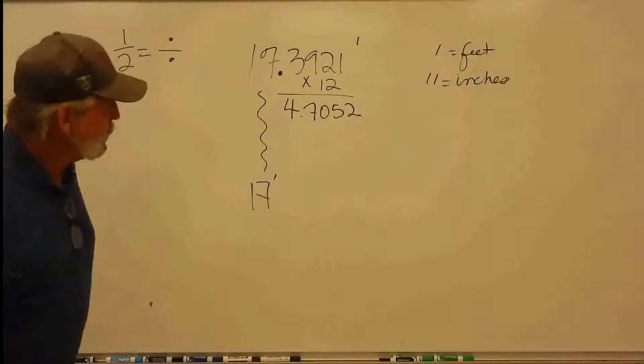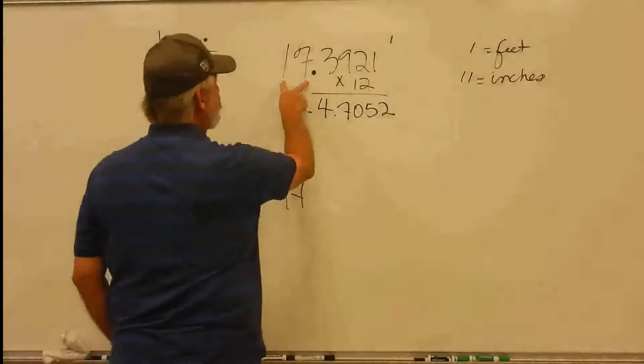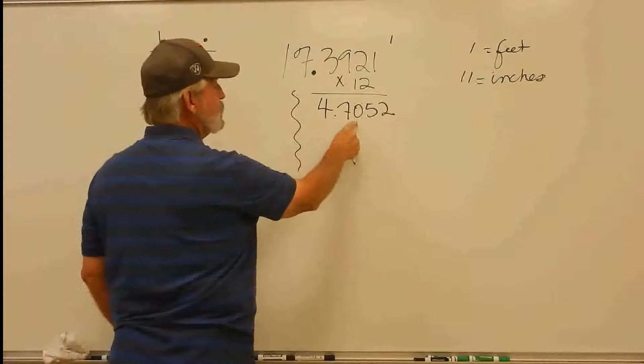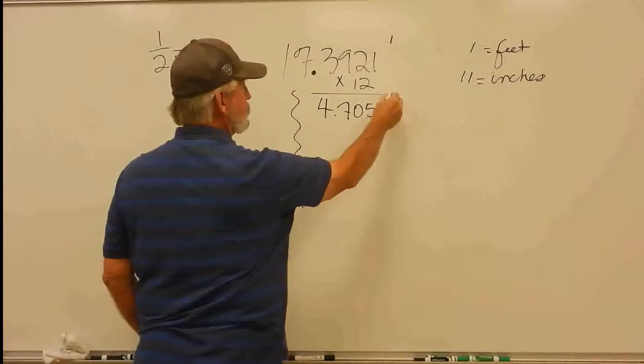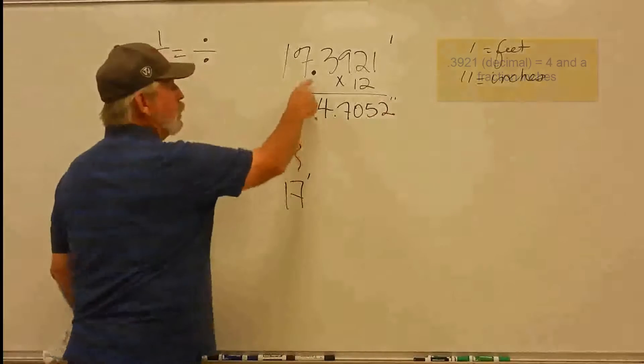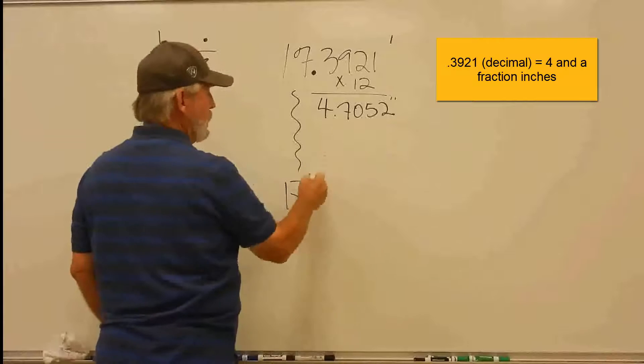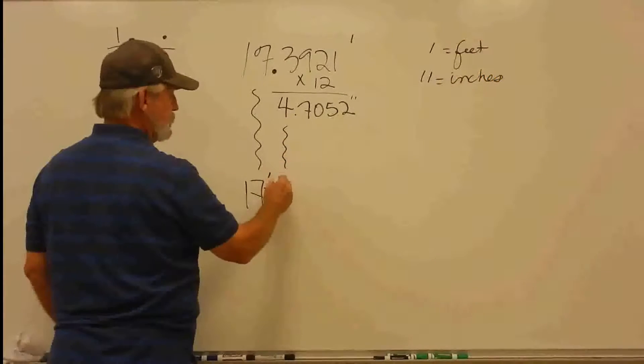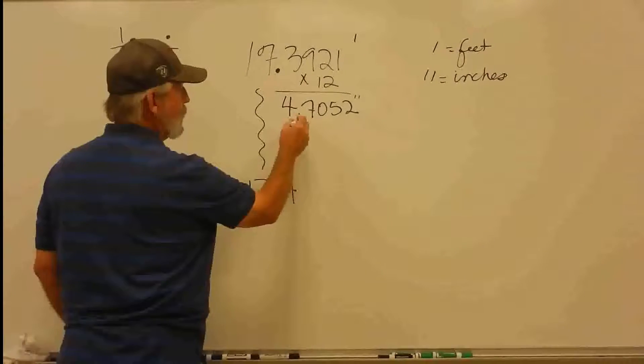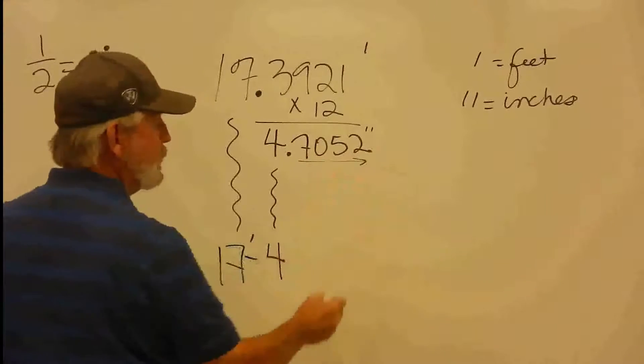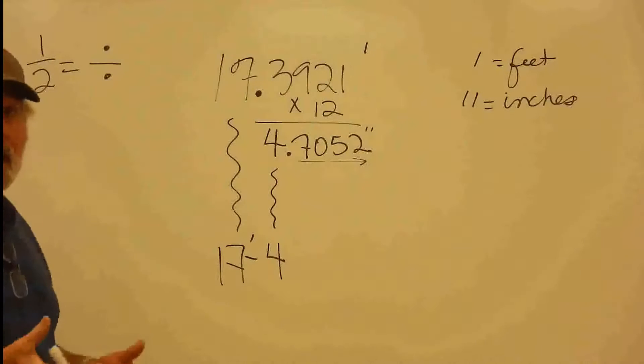So now this tells me that I've got 17 feet, and now I've got 4.7052 inches. 0.3921 is 4 inches plus this part right here. So now I've got 4 complete inches, and now everything to the right of my decimal place is parts of an inch.